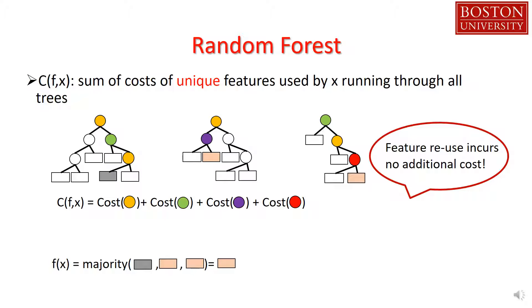So the total cost for example x is the sum of costs of the yellow, green, purple, and red features that it needs to acquire along the path. Notice some features are used more than once, but the acquisition cost is incurred only once, as its value can be saved in memory for repeated use.